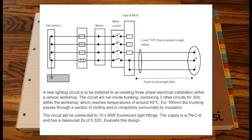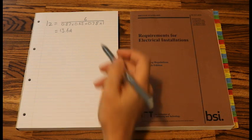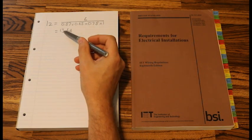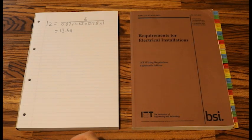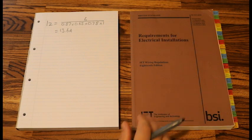The question describes a lighting circuit. Now I'm going to jump to our ZS value, our IZ value. So as you can see I've worked out my IZ with my C factors. My IZ is 13.6, so now I need to choose my IT, and that is from the IT tables in BS 7671.